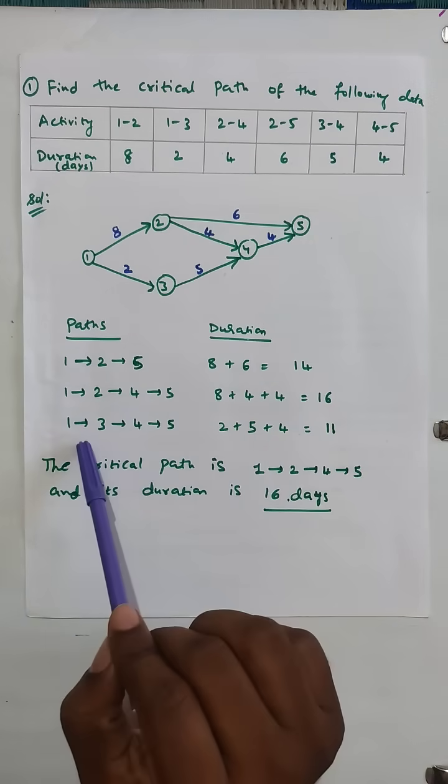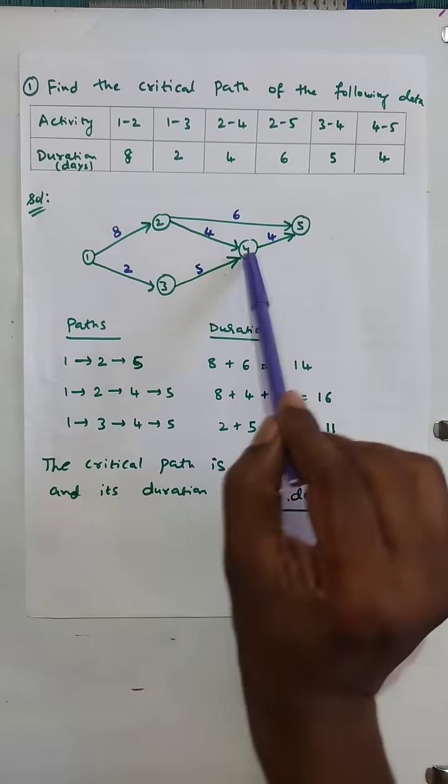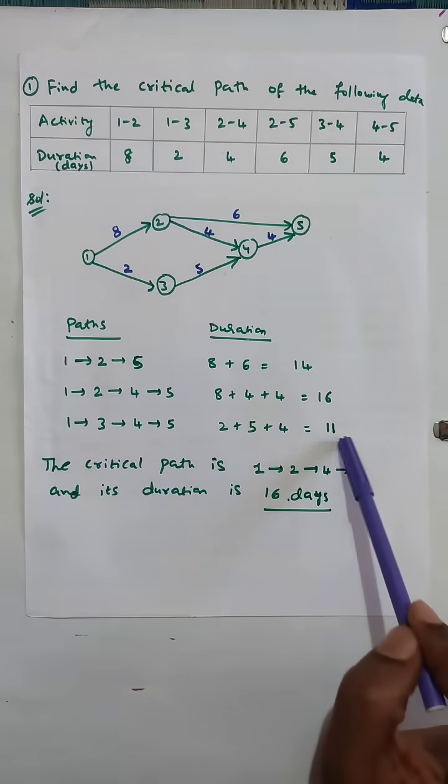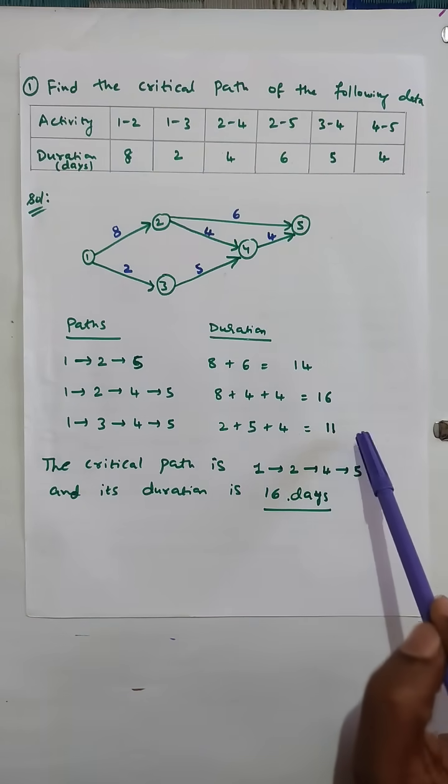equals 16 days. Third path 1-3-4-5: 2 plus 5 plus 4, that is 11 days. If you compare 14, 16, and 11, 16 is the highest.